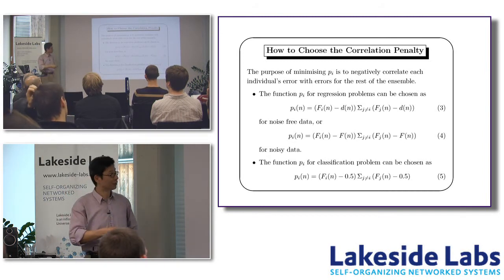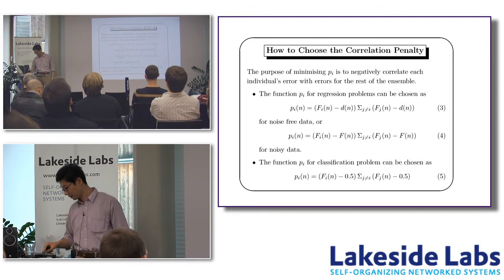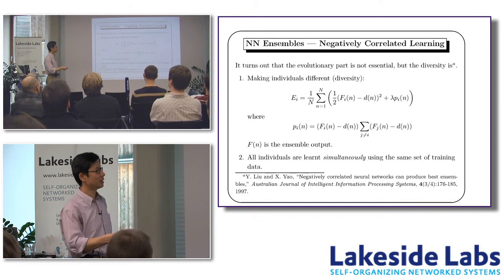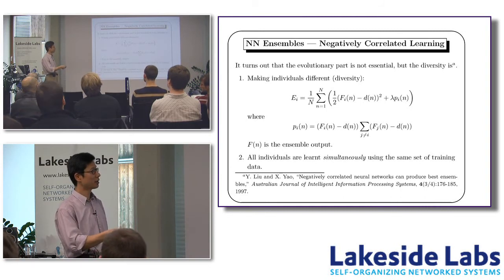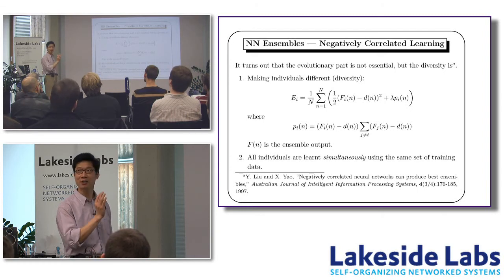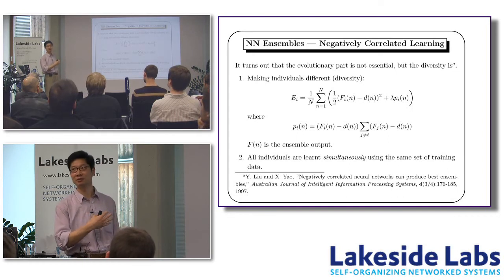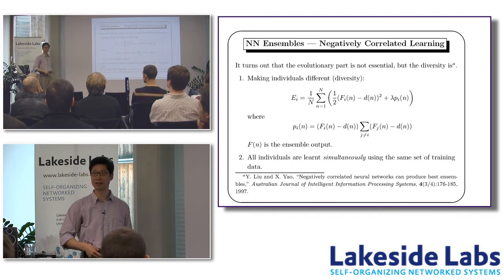One important follow-on: the formula I presented is an empirical formula in the sense that you can change the exact definitions in each part as long as you follow a single principle — the first part must be an estimation of the error of the i-th neural network, and the second must be an estimation of error for the rest of the ensemble. How you estimate it, you can plug in your favorite approach.